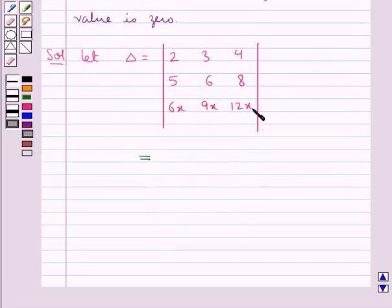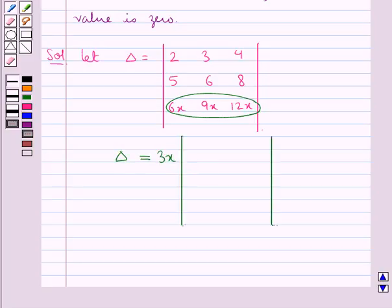Now from the third row, we can take 3x common. So this delta would be equal to 3x determinant with elements 2, 3 and 4 in the first row, 5, 6, 8 in the second row and 2, 3, 4 in the third row.